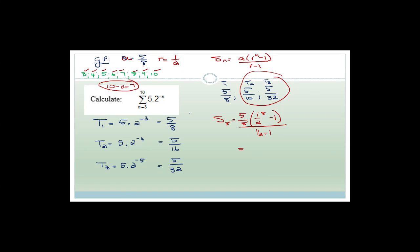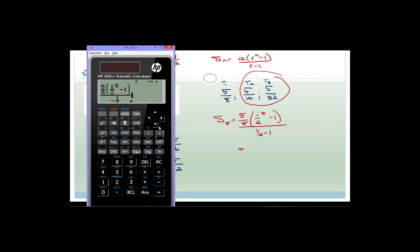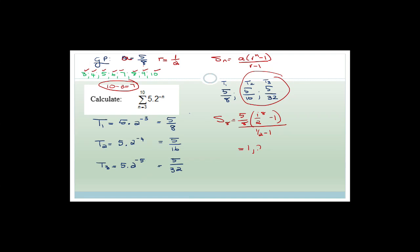So S8 = (5/8) × ((1/2)^8 − 1) / (1/2 − 1). Popping this into the calculator: 5/8 × ((1/2)^8 − 1) divided by (1/2 − 1) equals approximately 1.245, which rounds to 1.25.